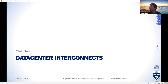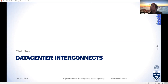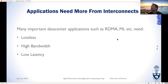Hi, my name is Clark Shran, and I'll talk about the data center interconnect. Emerging applications such as RDMA and large ML workloads need a network interconnect that is lossless, high bandwidth — at least 100 gigabits per second — and low latency.